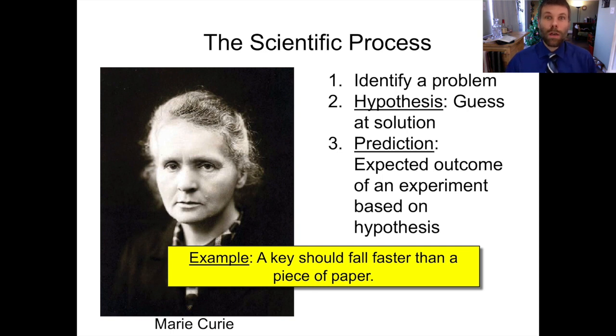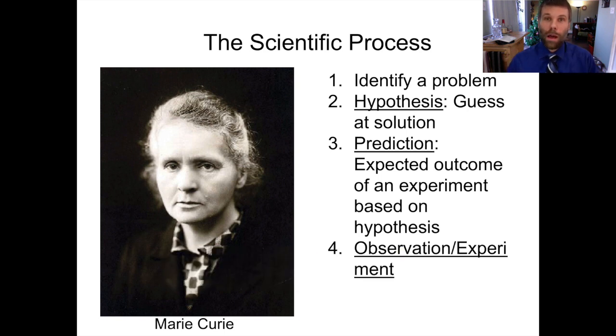Once we've got that prediction, we then have to test it. And that's where experimentation and observation come in. So we can either use a telescope to look out into the sky, or look at the humans around us, or design an experiment in our lab to test the prediction of our hypothesis.